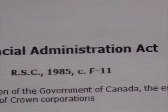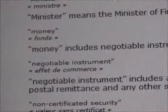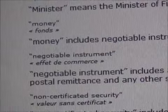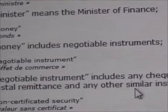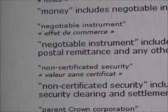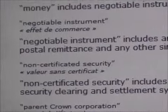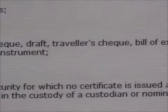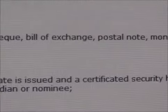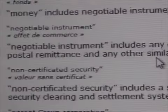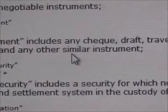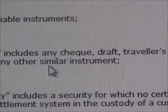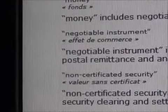Financial Administration Act of Canada. Money includes — notice that word 'includes' — negotiable instruments. Negotiable instruments includes any check, draft, traveler's check, bill of exchange, postal note, money order, postal remittance, and any other similar instrument. That's what money is. It's not just what you think you're carrying in your wallet with a picture of the Queen. Money is any negotiable instrument.